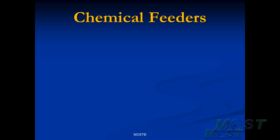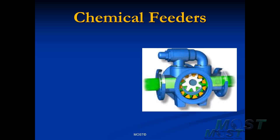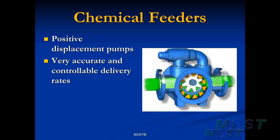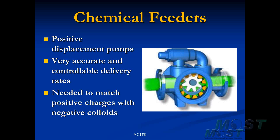To add our primary coagulant to the water, we need a chemical feeder. The typical chemical feeder used for primary coagulants is a positive displacement pump. The reason we choose positive displacement pumps is because they have very accurate and precise delivery rates, and they can be controlled over a wide range of flows. That means that we can deliver exactly the number of positive charges needed for charge neutralization to offset or neutralize the negative charges on the surfaces of the colloidal materials coming into our treatment plant.